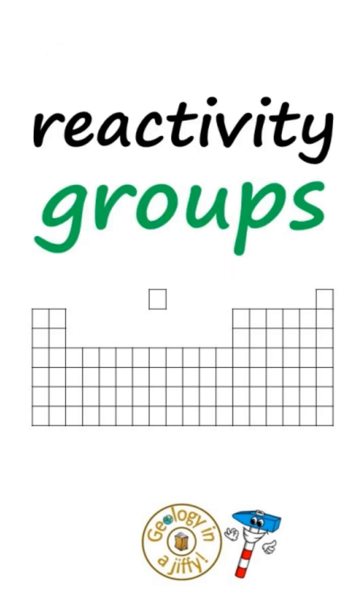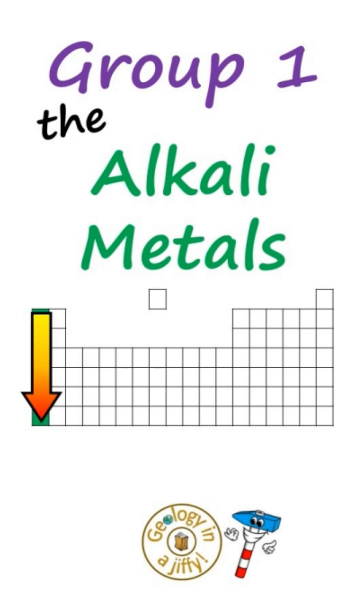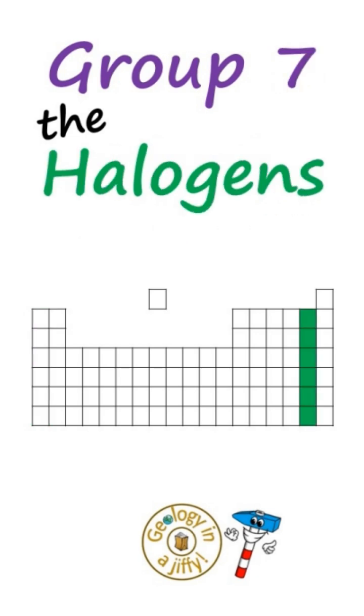The reactivity across the groups varies, with the alkali metals increasing reactivity downwards and in the halogens upwards.